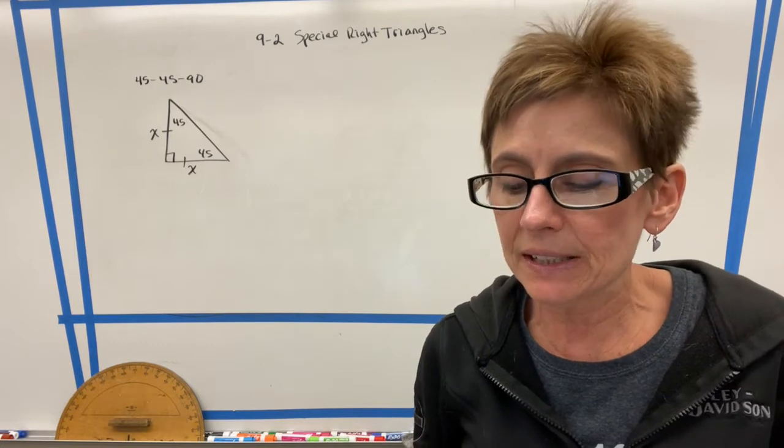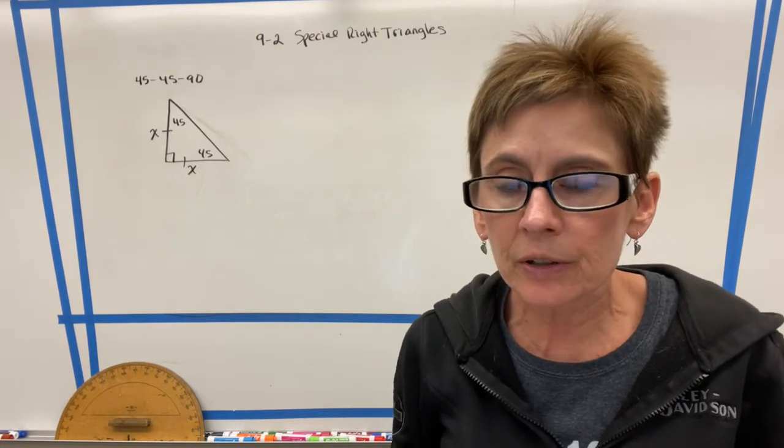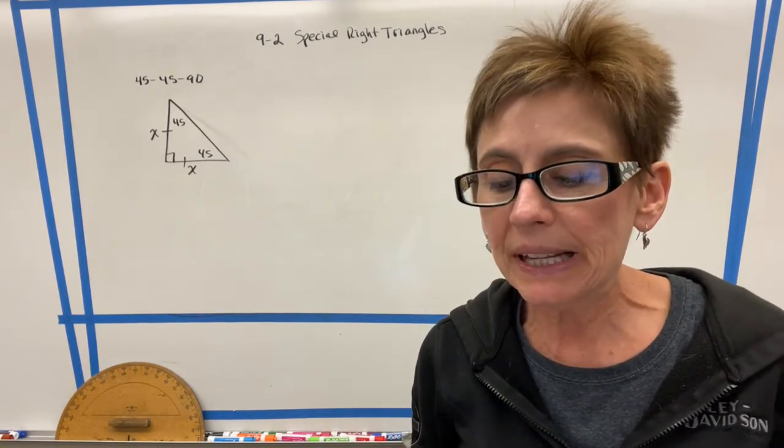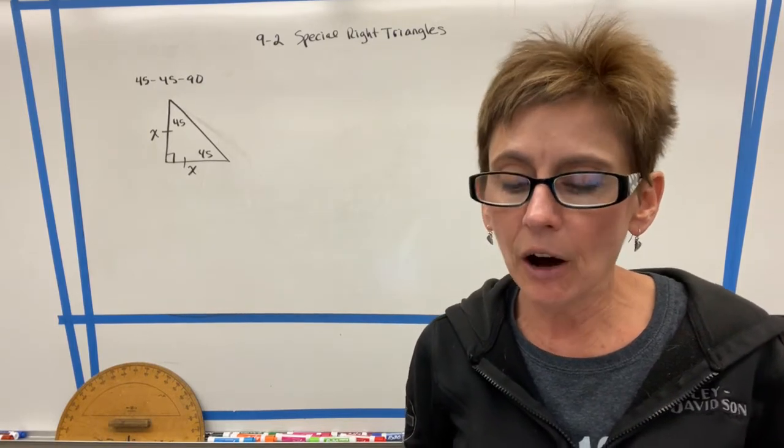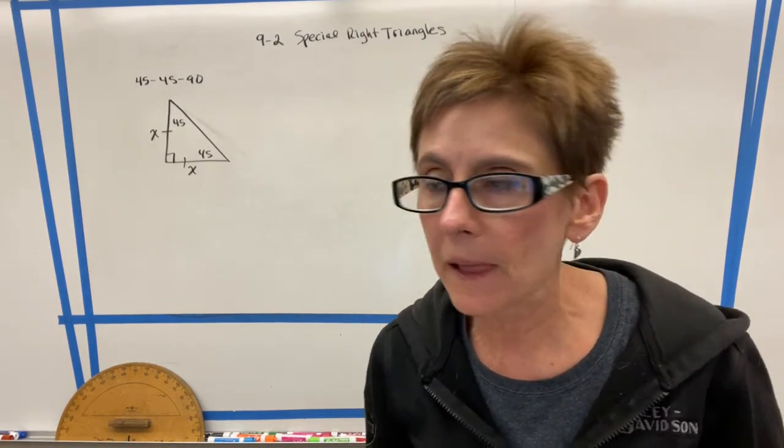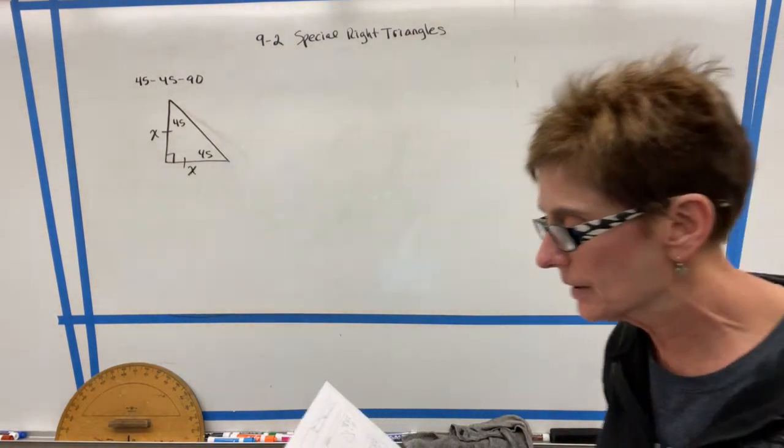Which does make sense because of the isosceles base angles converse, which tells us that if the base angles are congruent, the sides opposite those also are. So we know that this is an isosceles triangle.